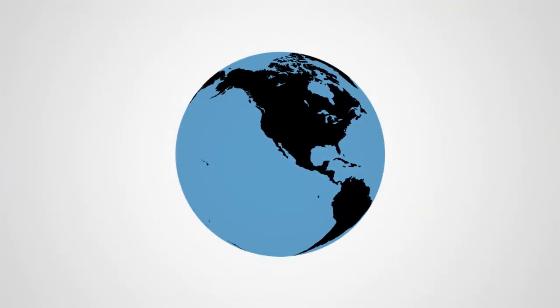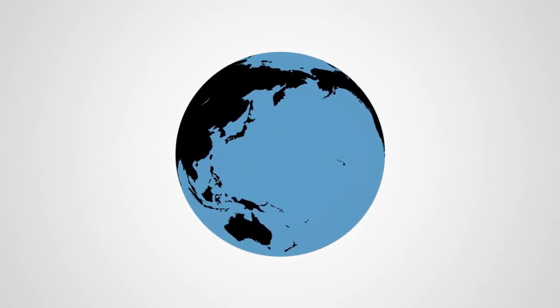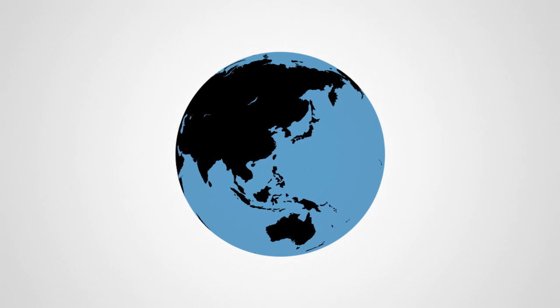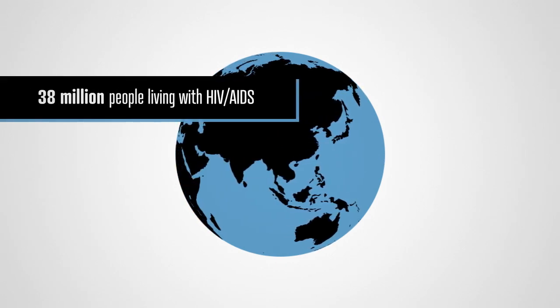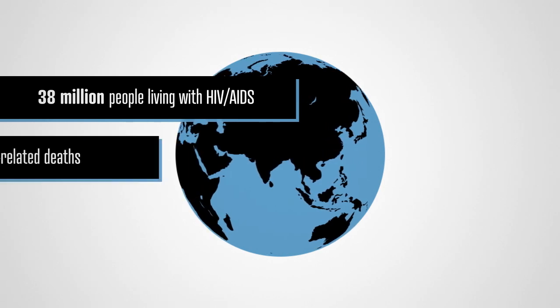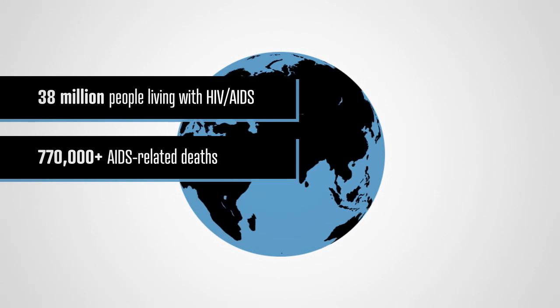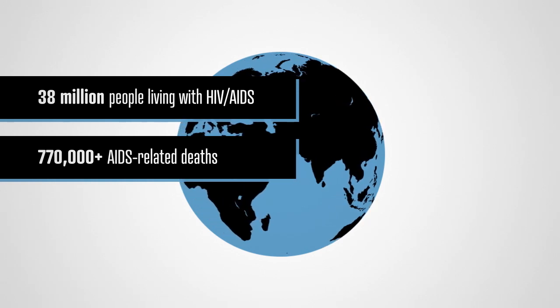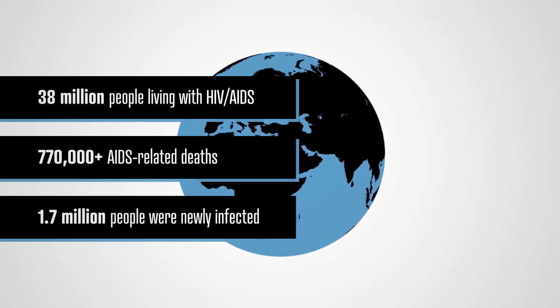Despite great progress in providing access to HIV prevention methods and antiretroviral therapy, as of 2019, there are around 38 million people living with HIV. Over 770,000 people died in the past year of AIDS-related complications, and 1.7 million people were newly infected with the virus.